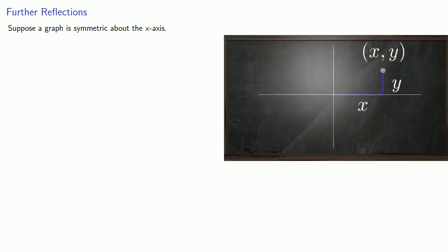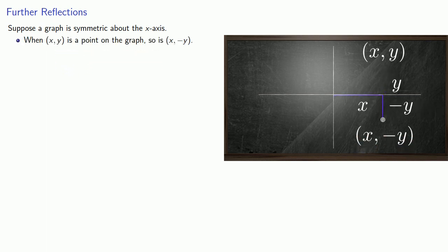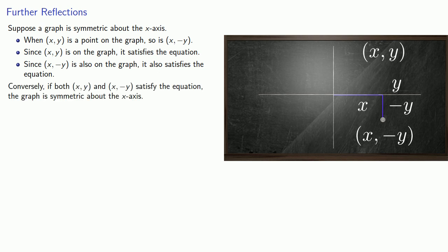What if our graph is symmetric about the x-axis? When (x, y) is a point on the graph, so is (x, -y). Since (x, y) is on the graph it satisfies the equation of the graph. Since (x, -y) is also on the graph, it also satisfies the equation. Conversely, if both (x, y) and (x, -y) satisfy the equation, the graph is symmetric about the x-axis.